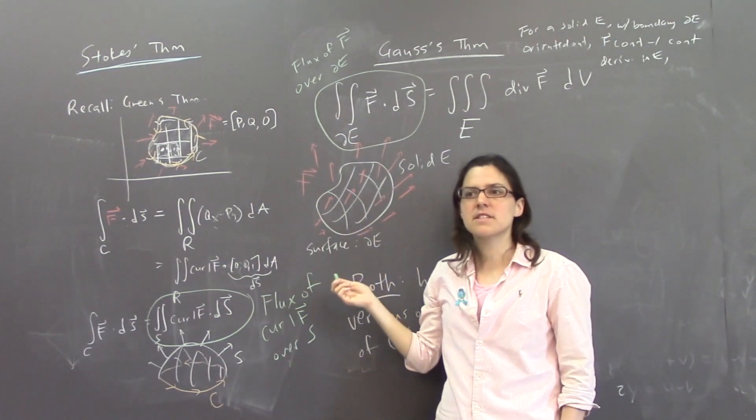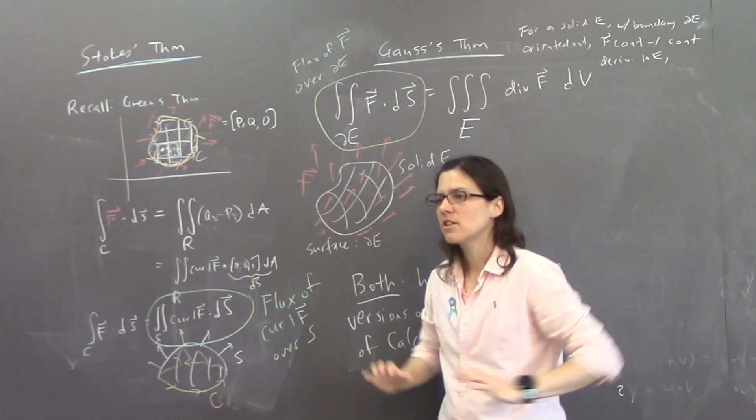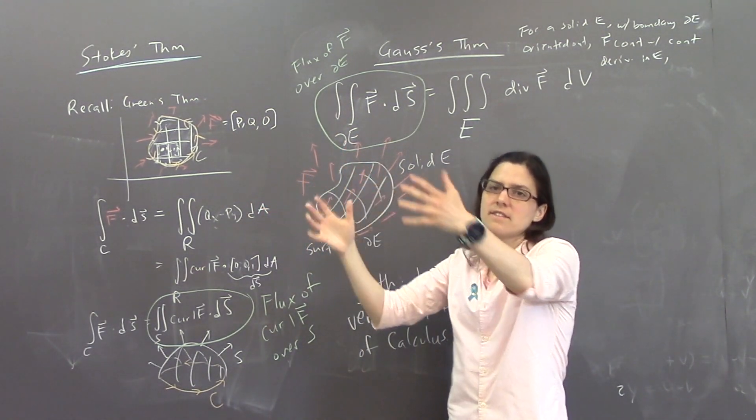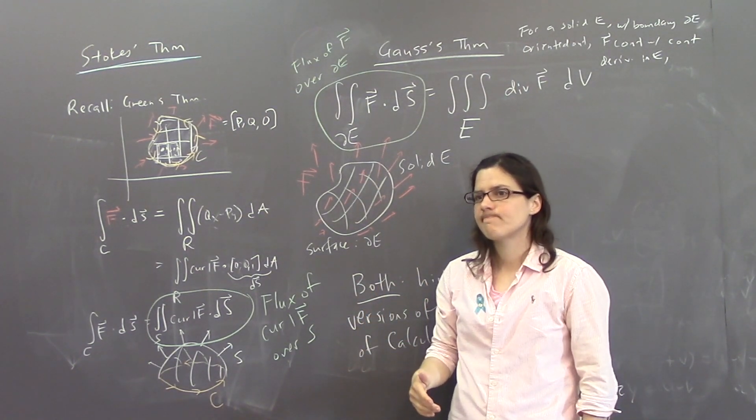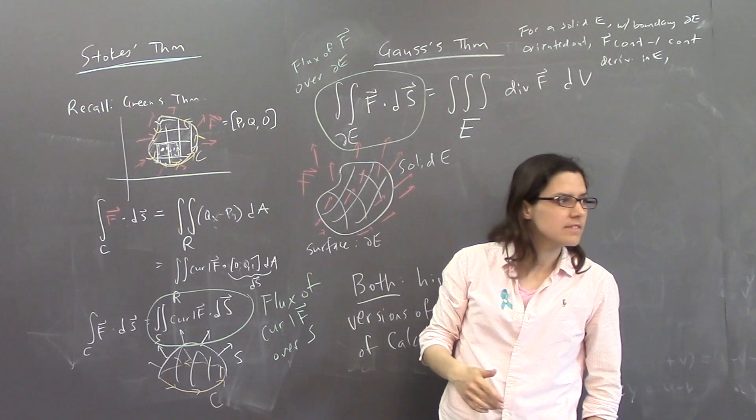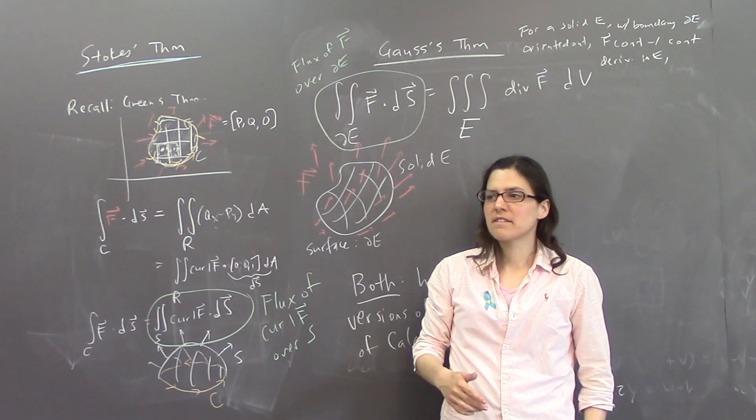And this one is the flux of the vector field F over the surface boundary of E. So flux is just a word that we use to talk about this. It comes from physics, because you have, you imagine you have an electric field going through a surface, and the amount of electric field is known as flux.